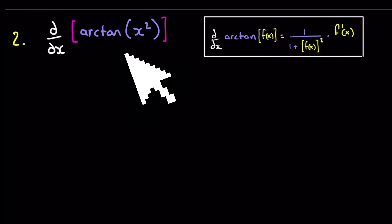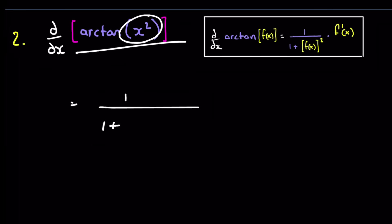Question two, find the derivative with respect to x of this expression here. So we'll get 1 over 1 plus, now x squared squared is x to the 4 times by the derivative of x squared. So we're going to do that now. So that's going to be 2x. So be careful there then. So that's going to be 2x over 1 plus x to the 4. And that is the end of question two.